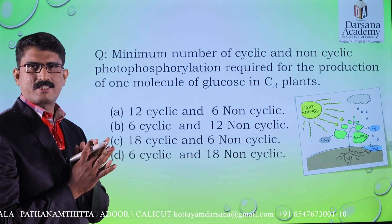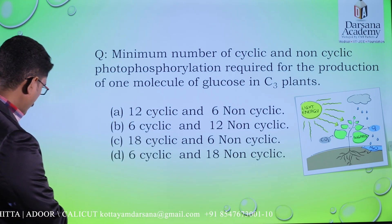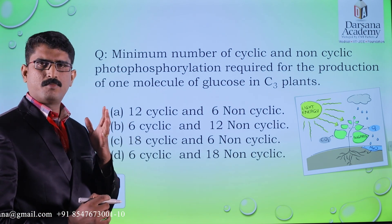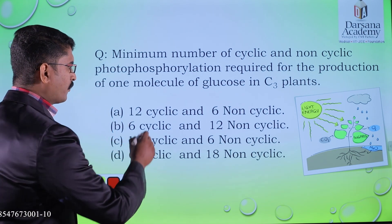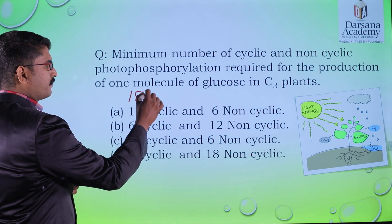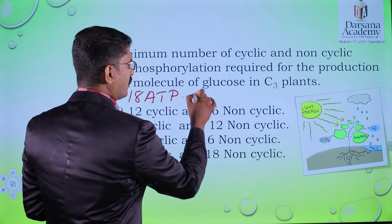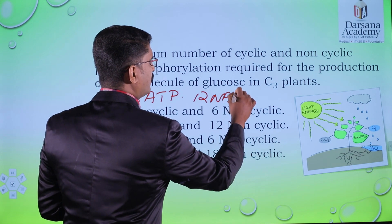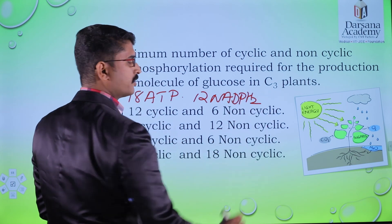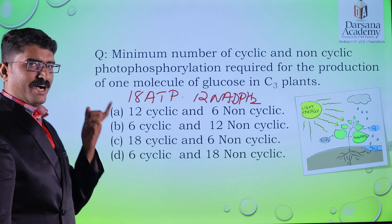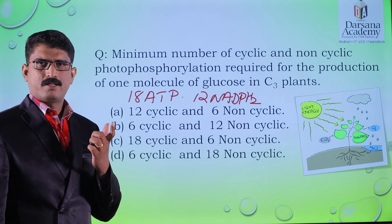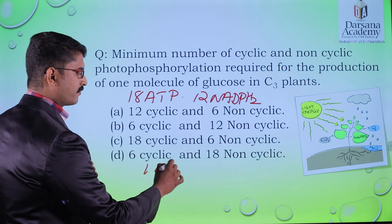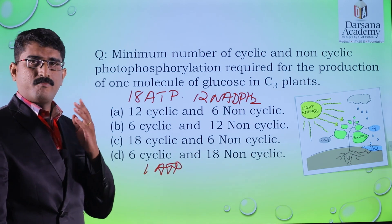In C3 plants, for the production of one molecule of glucose, we require 18 ATP and 12 NADH2. Now, from one cyclic photophosphorylation we will get one ATP.